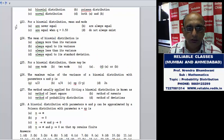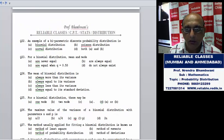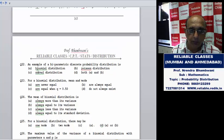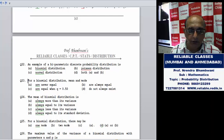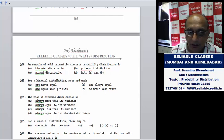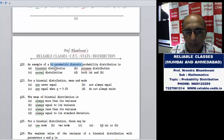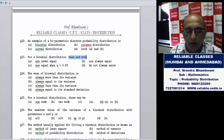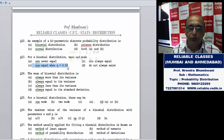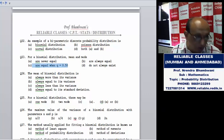For a binomial distribution: an example of bi-parametric discrete probability distribution. Normal distribution is continuous distribution, not discrete. For a binomial distribution, mean and mode are equal when p equals 0.5 and q equals 0.5.